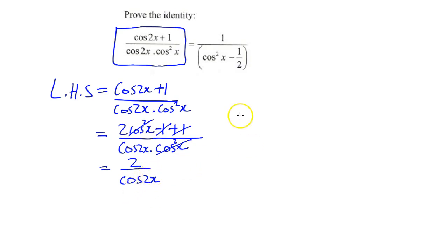So I'm going to see if I can simplify the right hand side. I have 1 over cos squared x minus half, and I can simplify a little bit further.